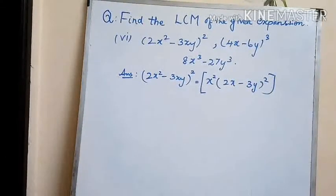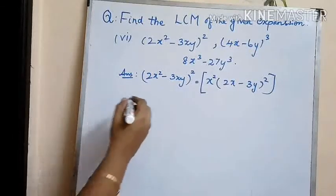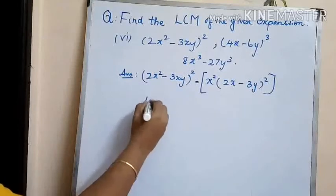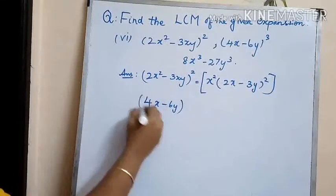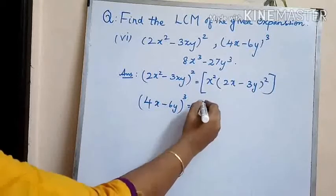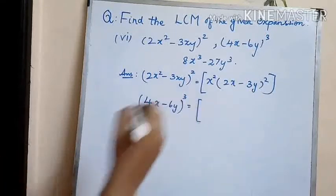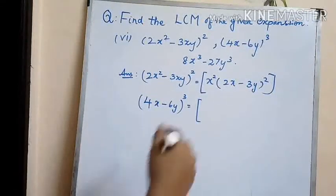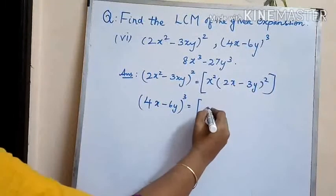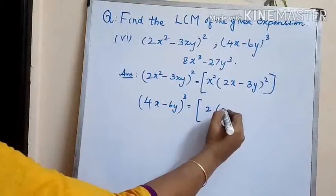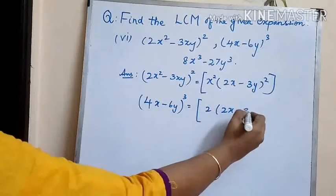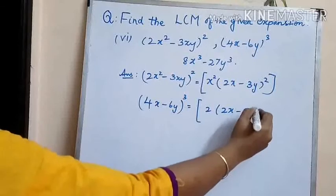The next polynomial is 4x minus 6y whole cube. We have a common factor 2 here, so it becomes 2 into 2x minus 3y whole cube. This 2 can be cubed later.